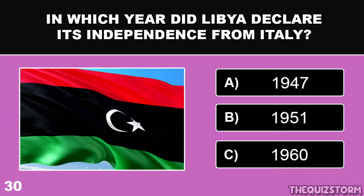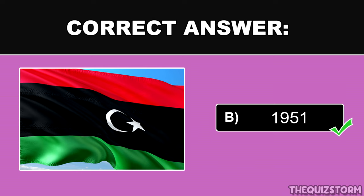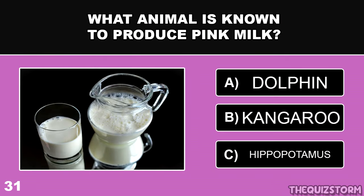In which year did Libya declare its independence from Italy? And the correct answer is 1951.